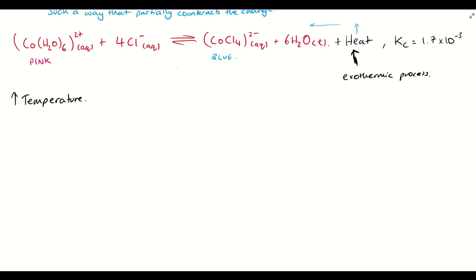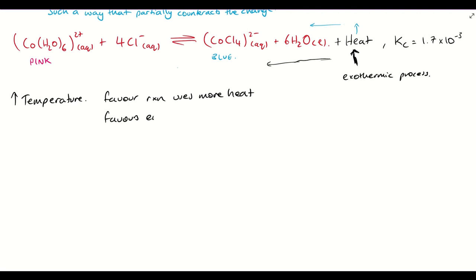Therefore, increasing temperature — we've added more heat, so we want to try and use this heat up. We're going to do that by favouring the reverse reaction, as Le Chatelier's principle predicts. So we increase the temperature and we're going to favour the reaction that uses more heat. We know that when heat is being absorbed from the surroundings into the system, that's an endothermic process. So increasing temperature favours the endothermic reaction — in this case the reverse reaction.